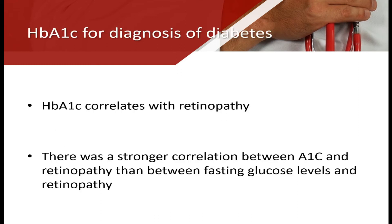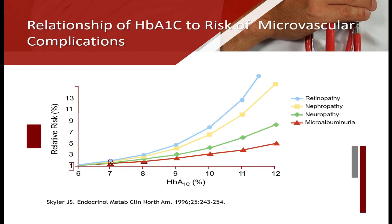HbA1c directly correlates with diabetic-related complications. There is a strong correlation with HbA1c level and diabetic retinopathy. In the chart, you can see HbA1c has a direct correlation with diabetic retinopathy, diabetic nephropathy, diabetic neuropathy, and microalbuminuria.